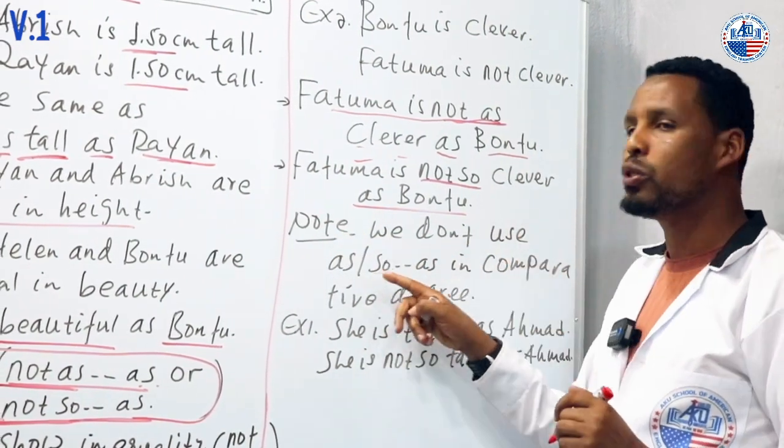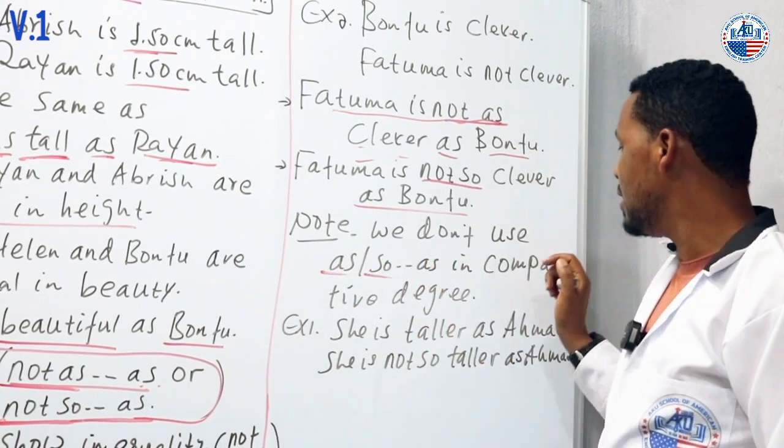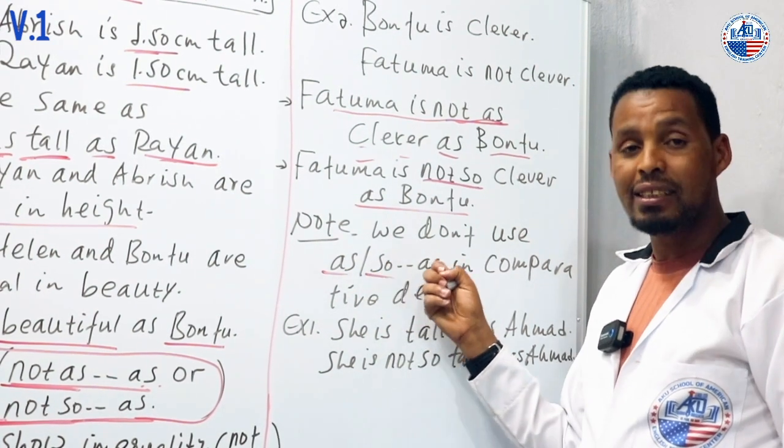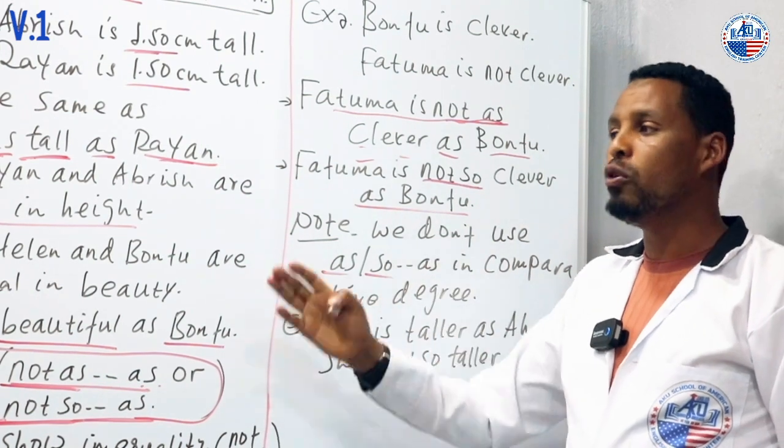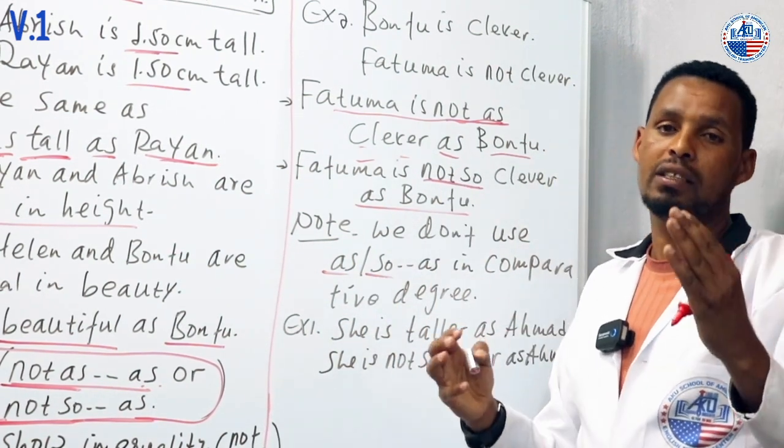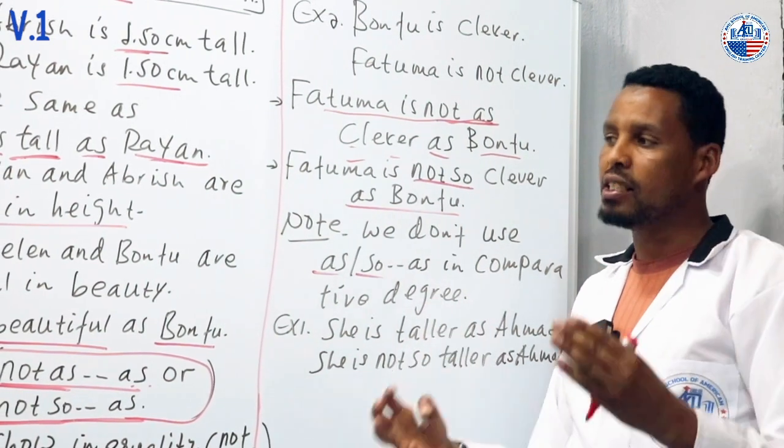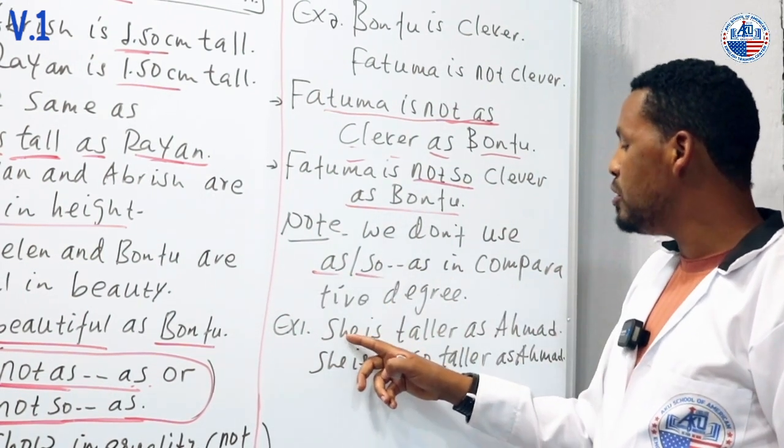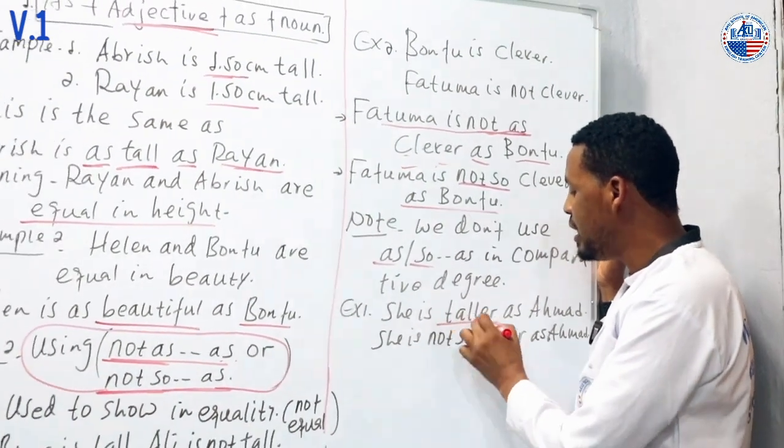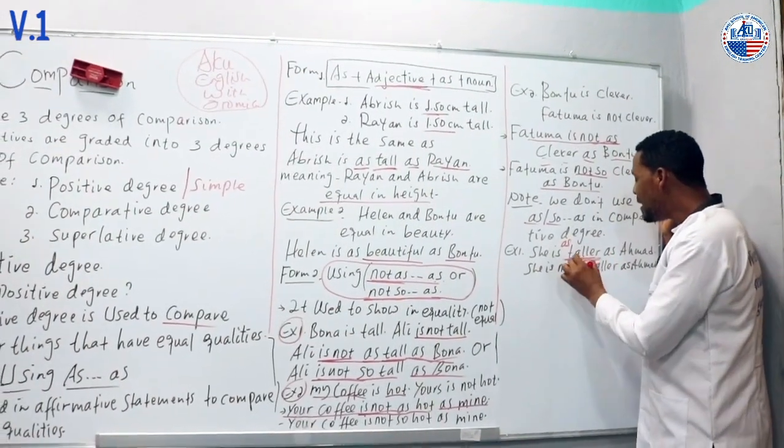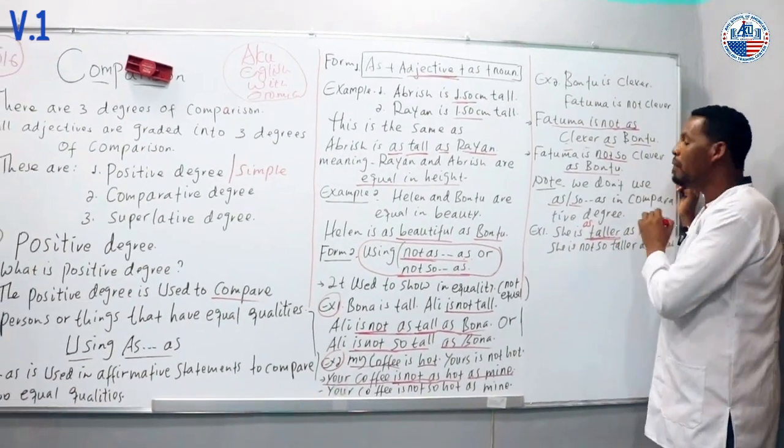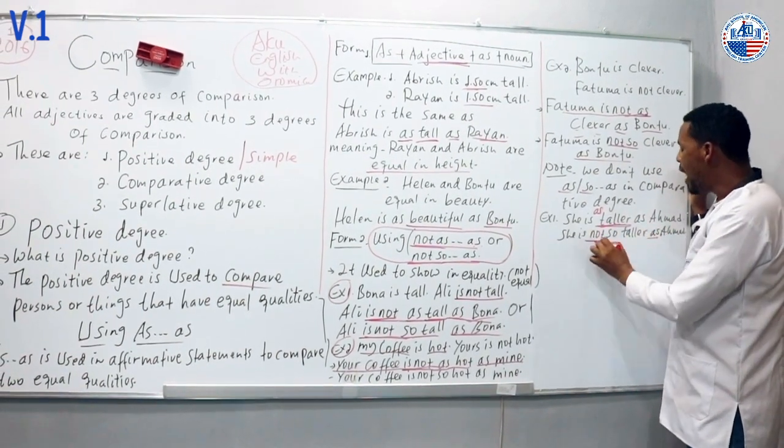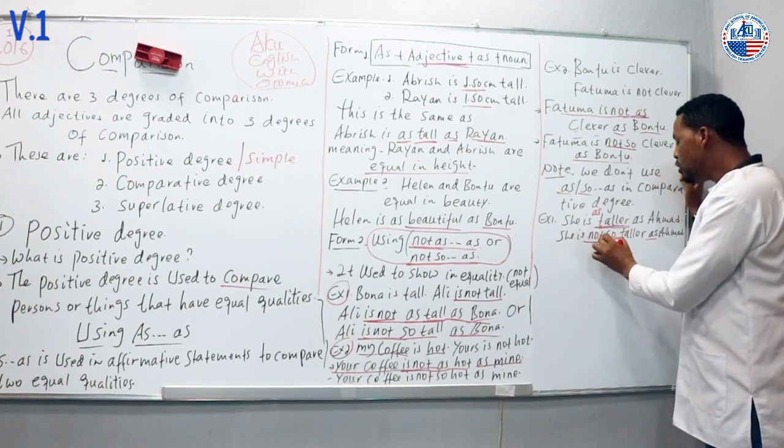Important note: We don't use 'as...as' or 'so...as' in comparative degree. For example, we say 'She is taller than Ahmed' - this is correct. But we cannot say 'She is not so taller than Ahmed' - this is wrong.